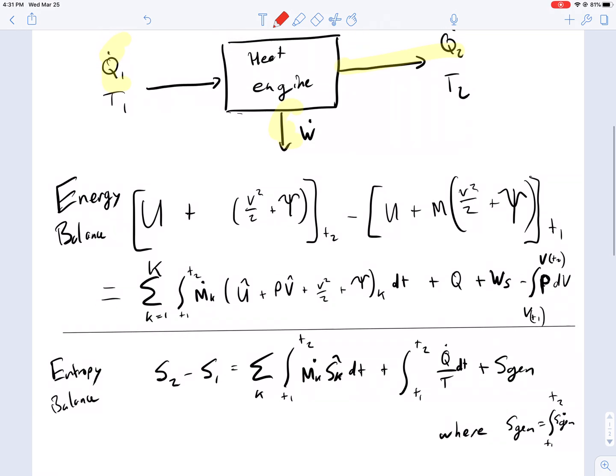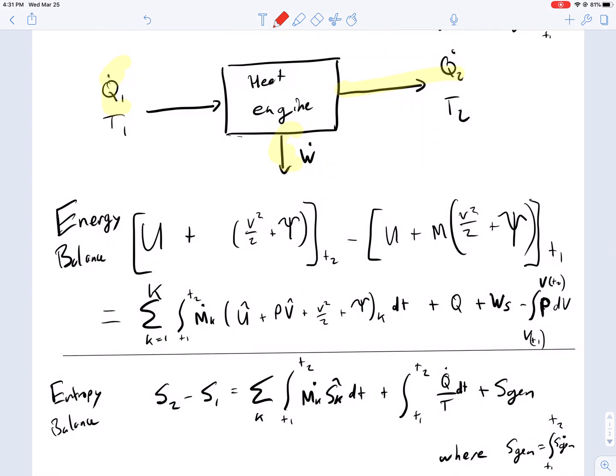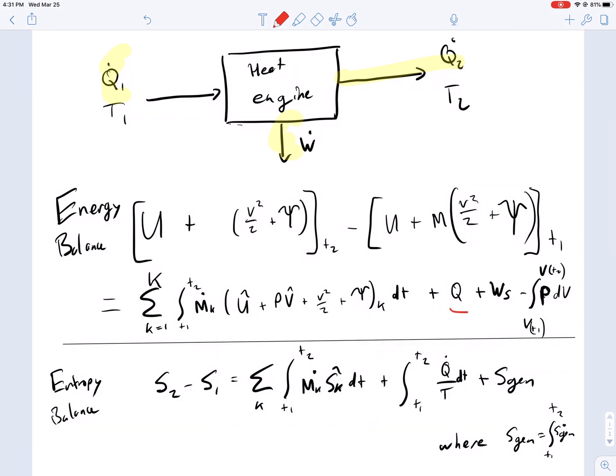Here you have two streams of energy work, so we're going to split Q into two terms here. We're going to neglect the internal changes in the kinetic and potential energies, so these terms will all go away.